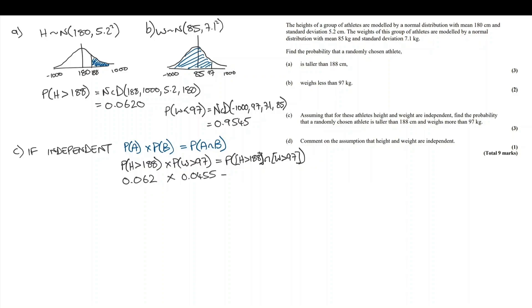0.062 multiplied by 0.0455. Two quite small numbers being multiplied, and that gives us 0.0028. So the probability of a randomly chosen athlete being both taller than 188 cm and weighing more than 97 cm is 0.28%.